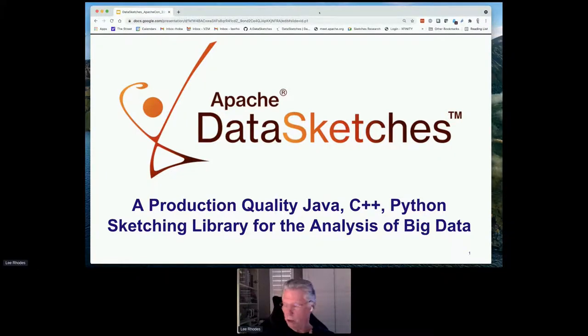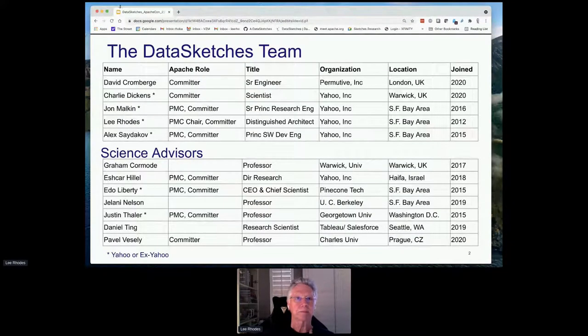So I'm going to be going through this talk today. This gives you insight into our team. We have David Cranbergé in London, a member of Permutiv Incorporated, and Charlie Dickens, a scientist at Yahoo. John Malkin is also a principal research engineer at Yahoo. Myself and Alex are at Yahoo, and this project started as an internal project in Yahoo in 2012 and went open source in 2015.